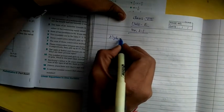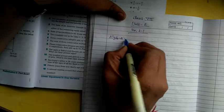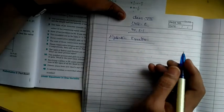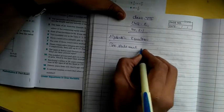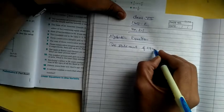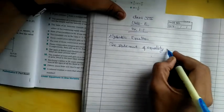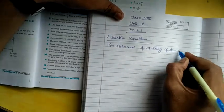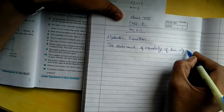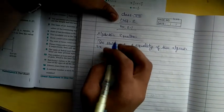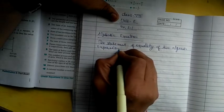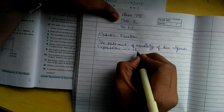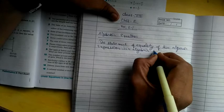Algebraic expression, dear students. What is an algebraic equation? The statement of equality of two algebraic expressions is an algebraic equation.